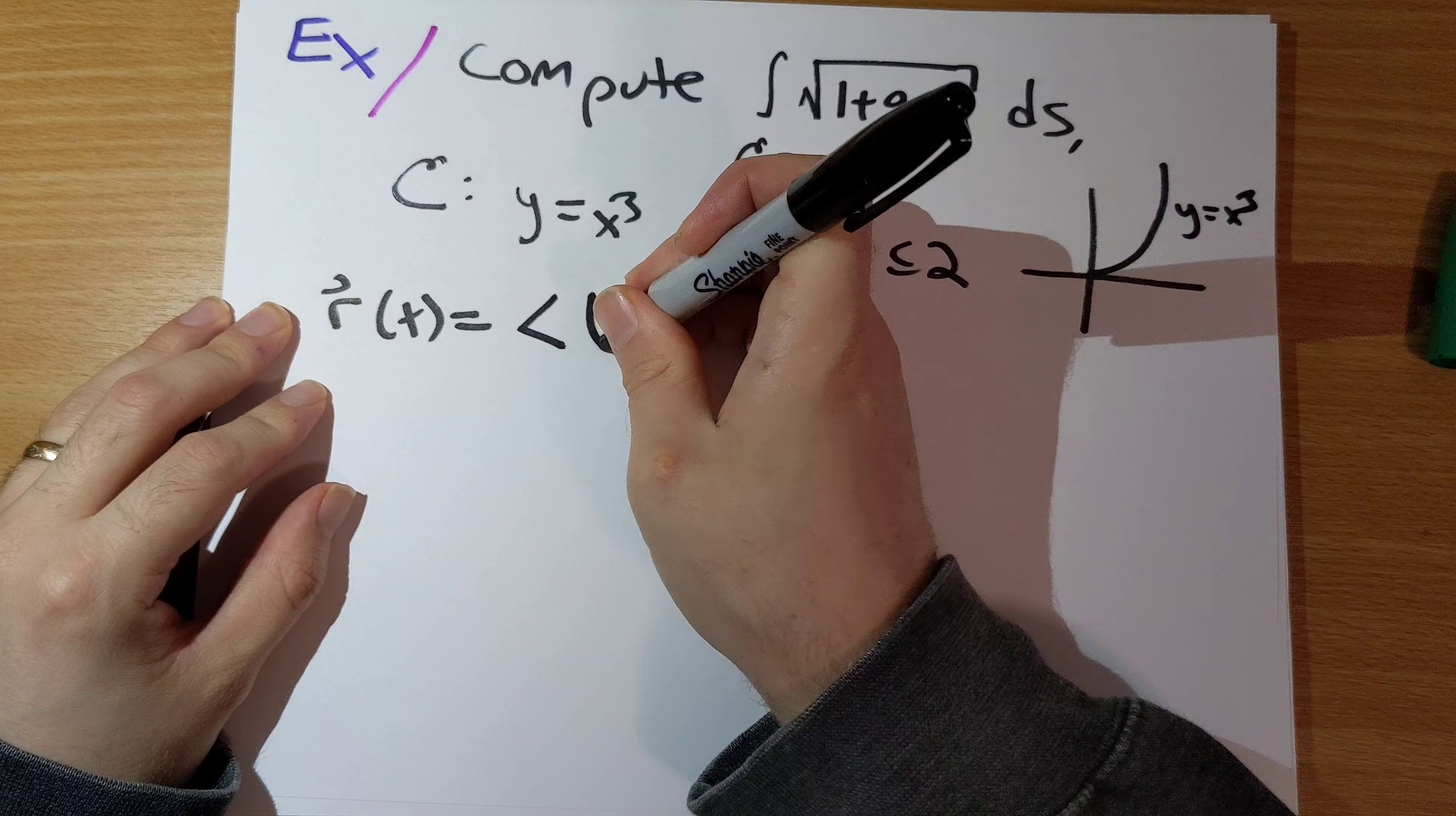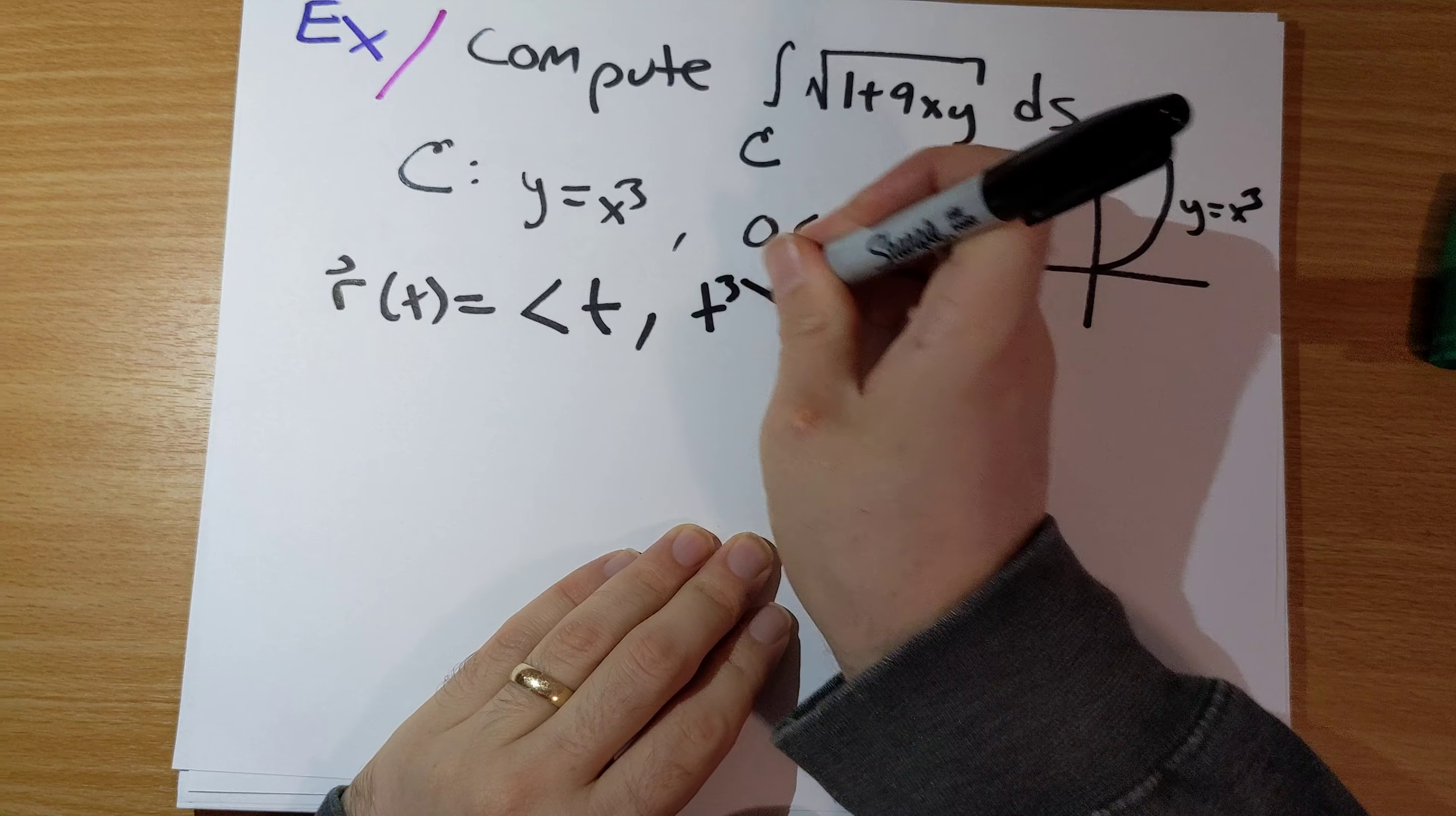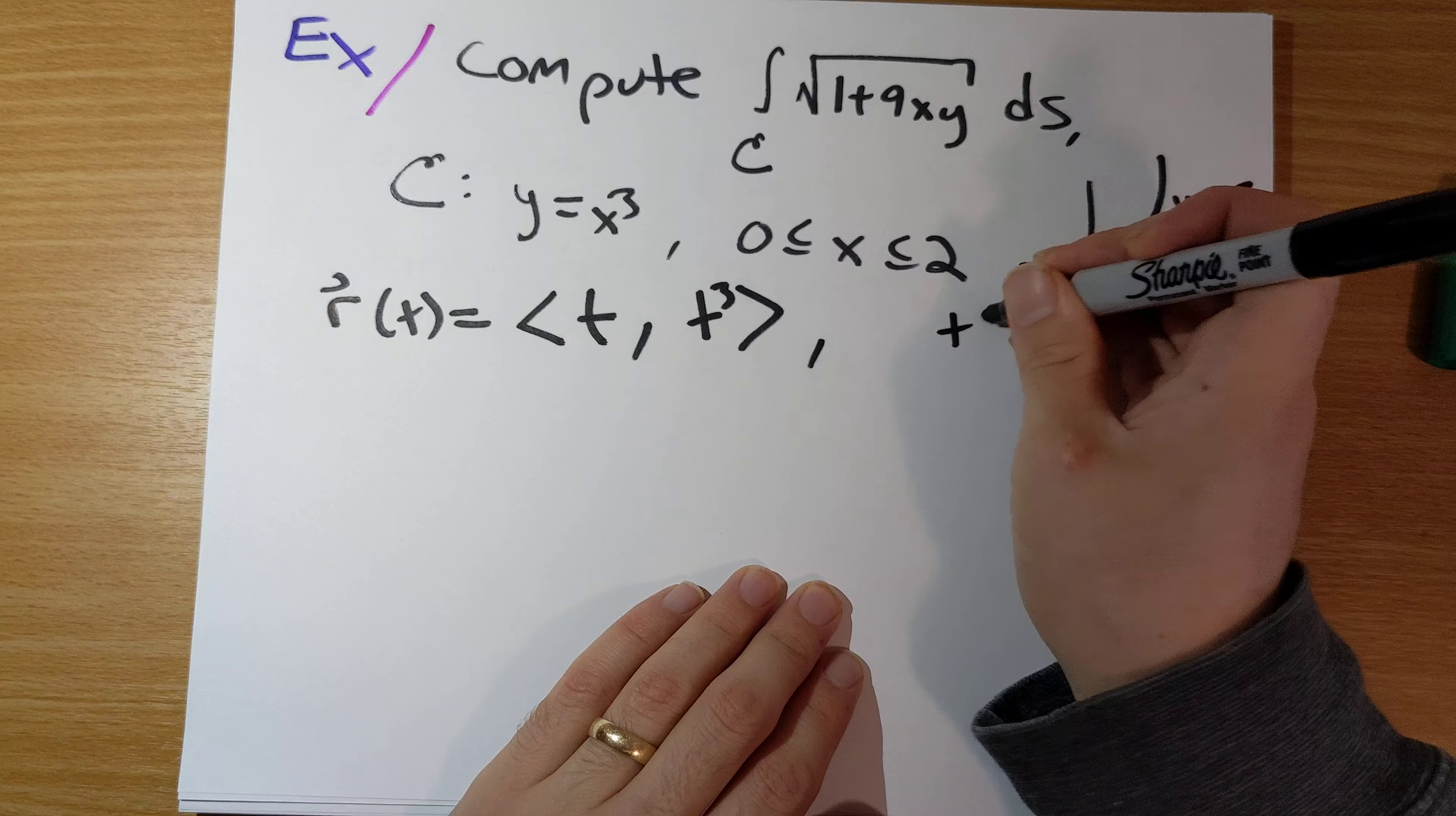Whenever we have this kind of thing, parametrization like a chunk of y equals function of x, probably the easiest parametrization is to replace x with t.